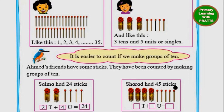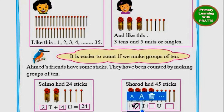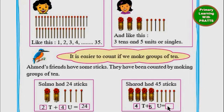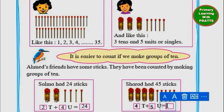Now Sharad had 45 sticks. Again, 1 bundle is equal to how many? 10. So we will count: 1, 2, 3, 4 — we will write 4 over here for the tenths. And in the units box, let's count: 1, 2, 3, 4, 5 — there are 5 units. So 4 tenths and 5 units is equal to 45. We will write 45.